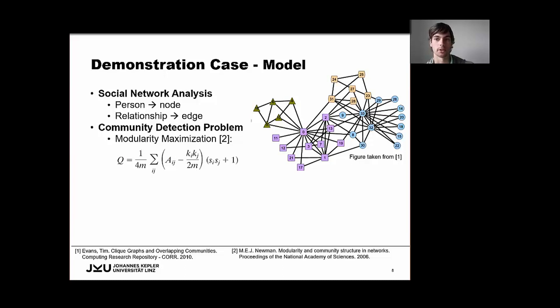So the goal is now to find an assignment for each person to a certain community in such a way that the connectivity within the communities is maximized and the ones between different communities is minimized. So conceptually, it is about finding social groups in a given network. And on the slide, you can also see the formula, which has to be maximized in this sense.